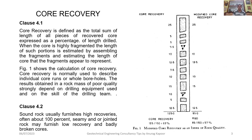As per Clause 4.1 of this code, core recovery is defined as the total sum of length of all pieces of recovered core expressed as a percentage of drilled length. When the core is highly fragmented, the length of such portions is estimated by assembling the fragments and estimating the length of core that the fragments appear to represent. Core recovery is normally used to describe individual core runs or whole boreholes. The results obtained in a rock mass strongly depend on drilling equipment used and on the skill of the drilling team.